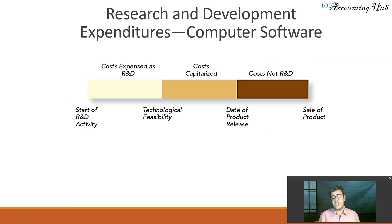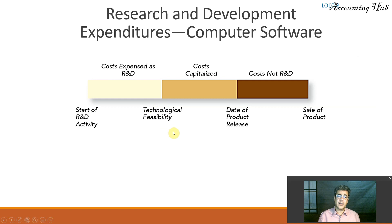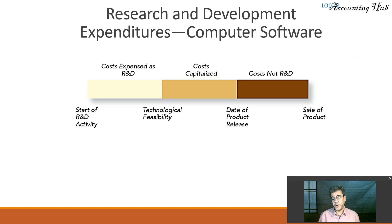An exception in the U.S. is software. Software follows a different treatment: costs during the research phase are expensed as R&D. After we establish technological feasibility until the date of product release — that is the development phase — we capitalize it and amortize it based on the useful life of the project, so it becomes an intangible asset. After that, it becomes a regular expense. So there is a small difference for computer software.